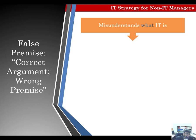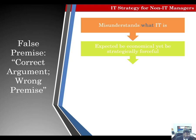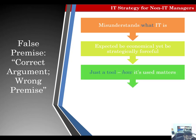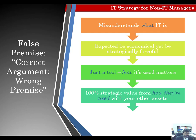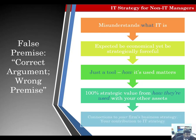IT is the costliest yet least understood corporate asset. Before declaring something a commodity, we must know what that something is. Computers, iPads, Microsoft Office, Apple Pay-like systems, and internet connections are only a fraction of corporate IT — such things are indeed commodities. But 100% of their strategic value comes from how they are used together with your firm's assets, not in isolation. The same IT system can deliver completely different results in two different firms. Given the same hammer, you might create a masterpiece and I might hurt my hand. IT is just a tool — how it is used matters, and the firm that uses it best wins.